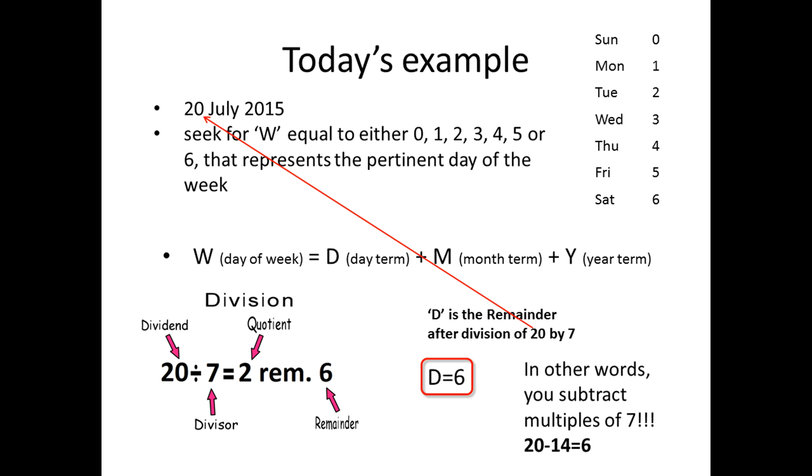D, the day term, M, the month term, and Y, the year term. Now D is the remainder after division of 20 by 7, which is equal to 6. In other words, you subtract multiples of 7 as many times you need until you remain with something no greater than 6. So, D equals 6.